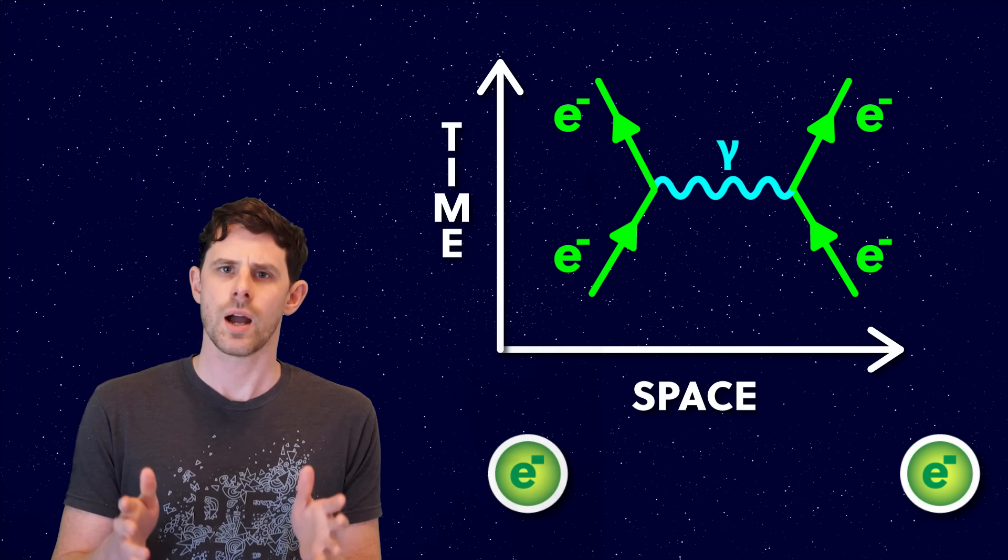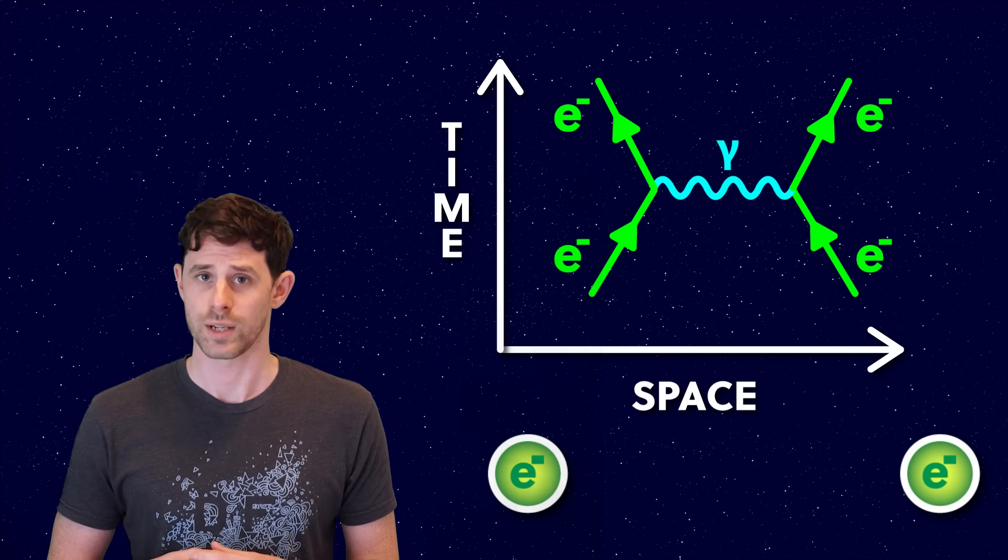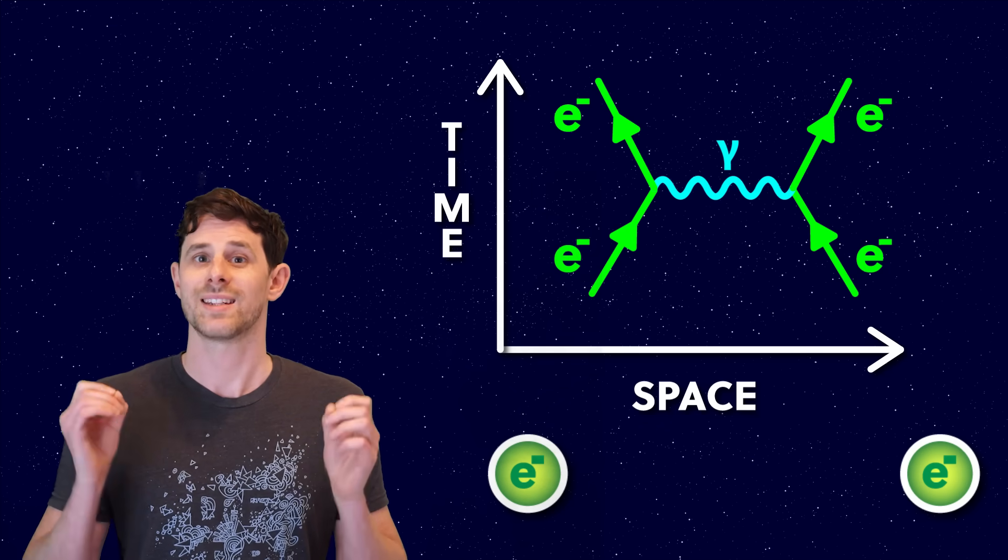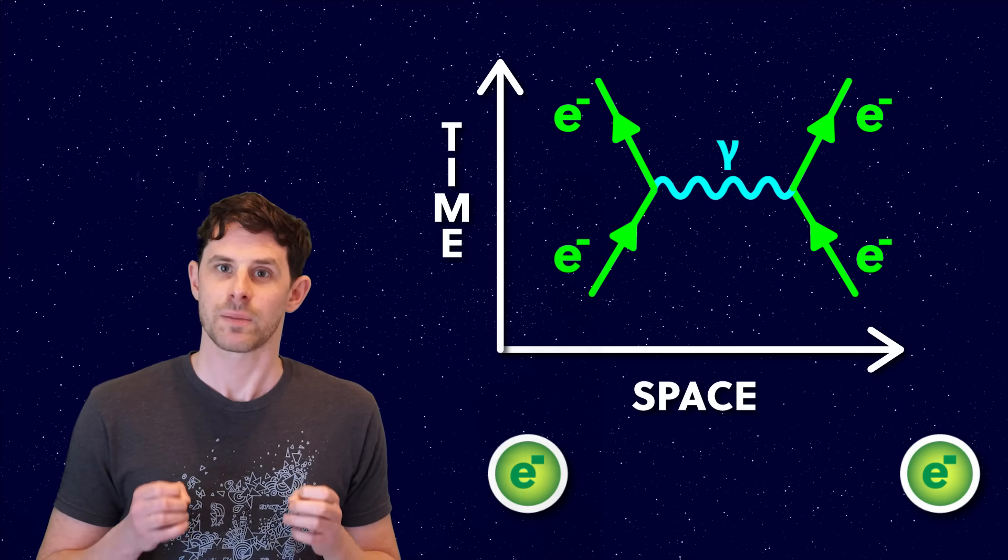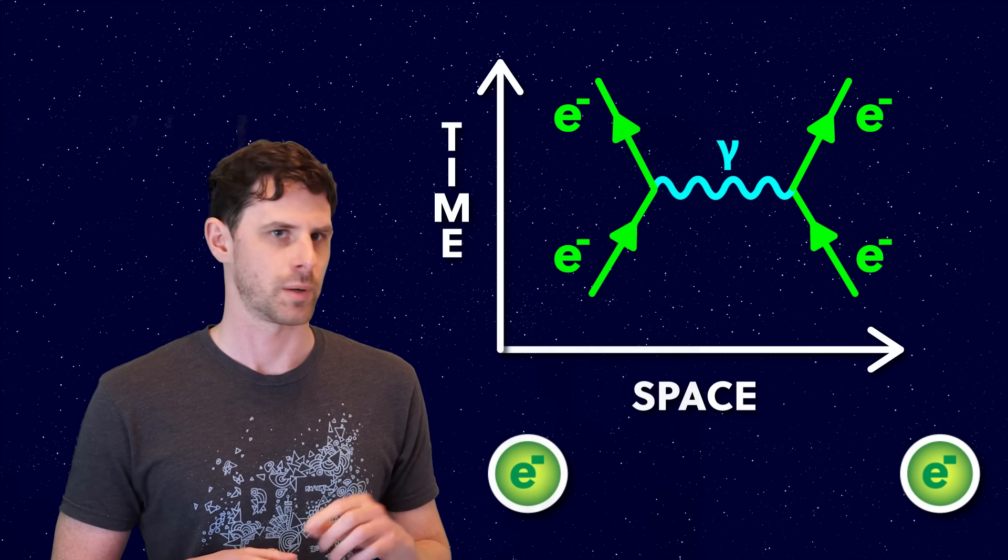In this video I'm drawing time going upwards, but some people draw it going sideways, which is quite annoying. So the first thing you need to do when you look at a Feynman diagram is to check which way time is going. Hopefully they tell you, and if they don't, then they're bad people. Drawing time going upwards is the most common way, so that's what I'm doing here.